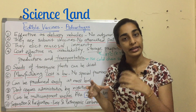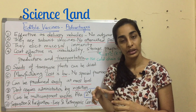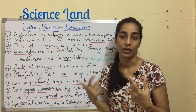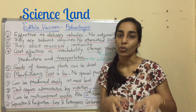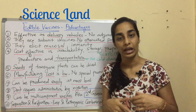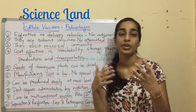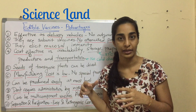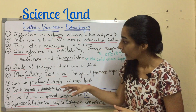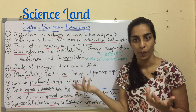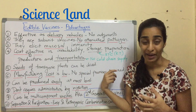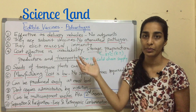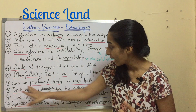The seeds of transgenic plants can be dried and used further. Once you integrate an antigen gene into the plant genome and the plant produces seeds, you can store and dry those seeds and use them whenever you want to produce the next batch of that edible vaccine. The manufacturing cost is low because no special premises are required for production.